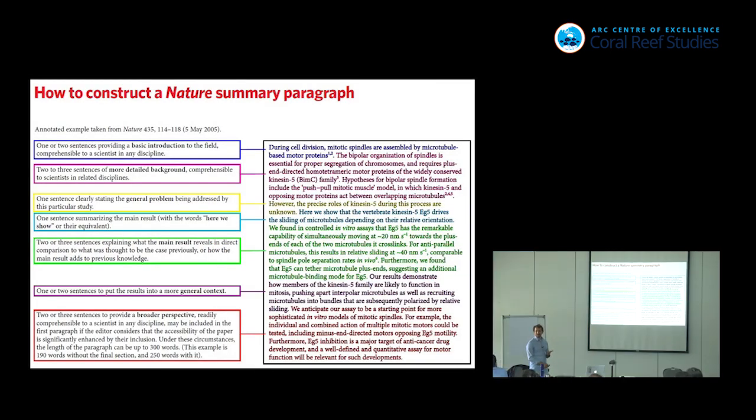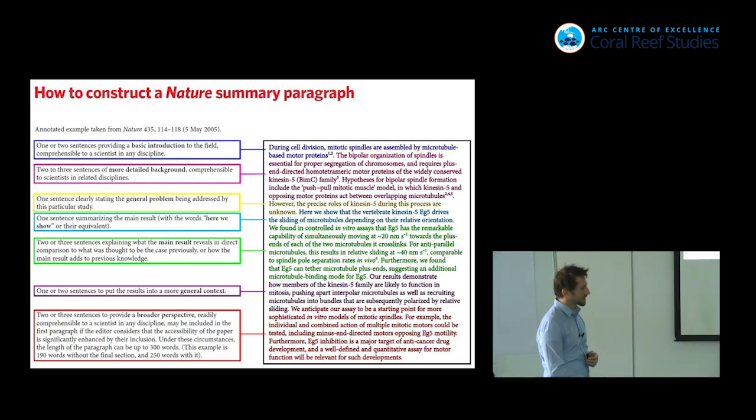So I saw this one online and I thought it was a great way to do it. So it's how to construct nature summary paragraph. So the first bit is one or two sentences providing a basic introduction into the field. The second bit is two or three sentences of a more detailed background comprehensible to scientists in related disciplines. So the first one is meant to be for anyone in the world. Any scientist should be able to get the first sentence. The next two are a little bit nerdier for your discipline. But then the one sentence clearly stating the general problem. So this then should go back up to that higher level. Everyone should be able to understand what the problem is.